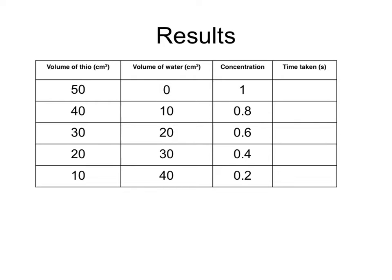Let's imagine some results for the most dilute of the solutions. In other words, 10 of the thio diluted with 40 of the water. This might take, for example, 200 seconds. And as we increase the concentration of the thio solution, so the time taken for the reaction to reach this same endpoint reduces and reduces. And as we can see, that shows us that the rate of the reaction is increasing as the concentration of the thio is increasing.